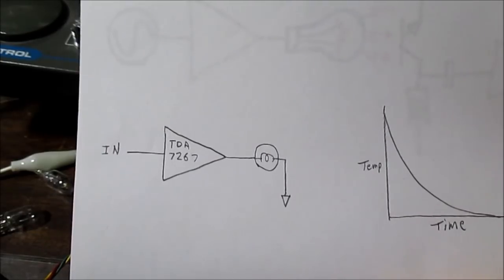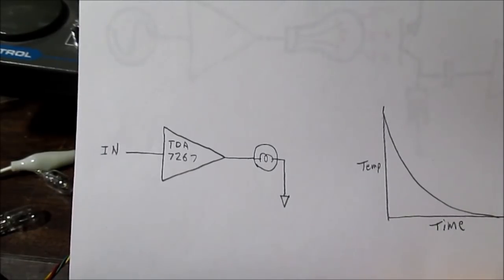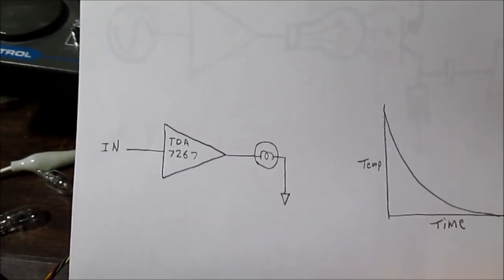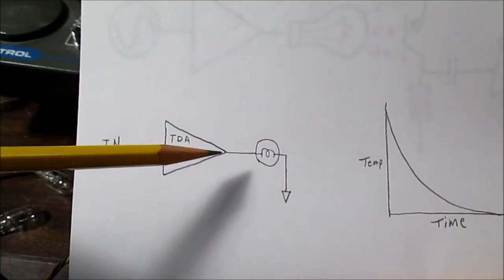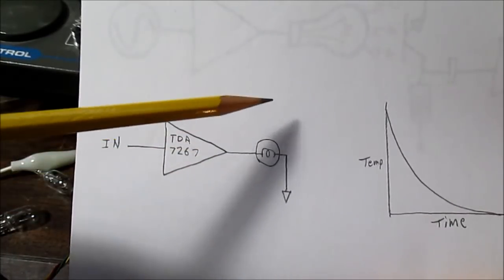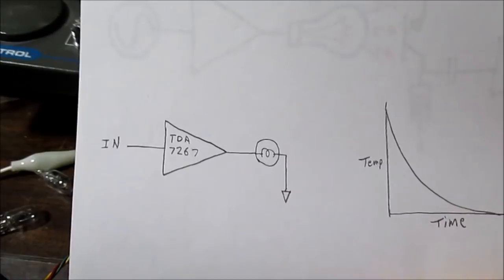And somebody in the comments section said, why don't you put a bias on the bulb, a constant voltage to keep the bulb turned on at an even brightness. And then I could put the signal on and vary it around that biasing point, see how it works.